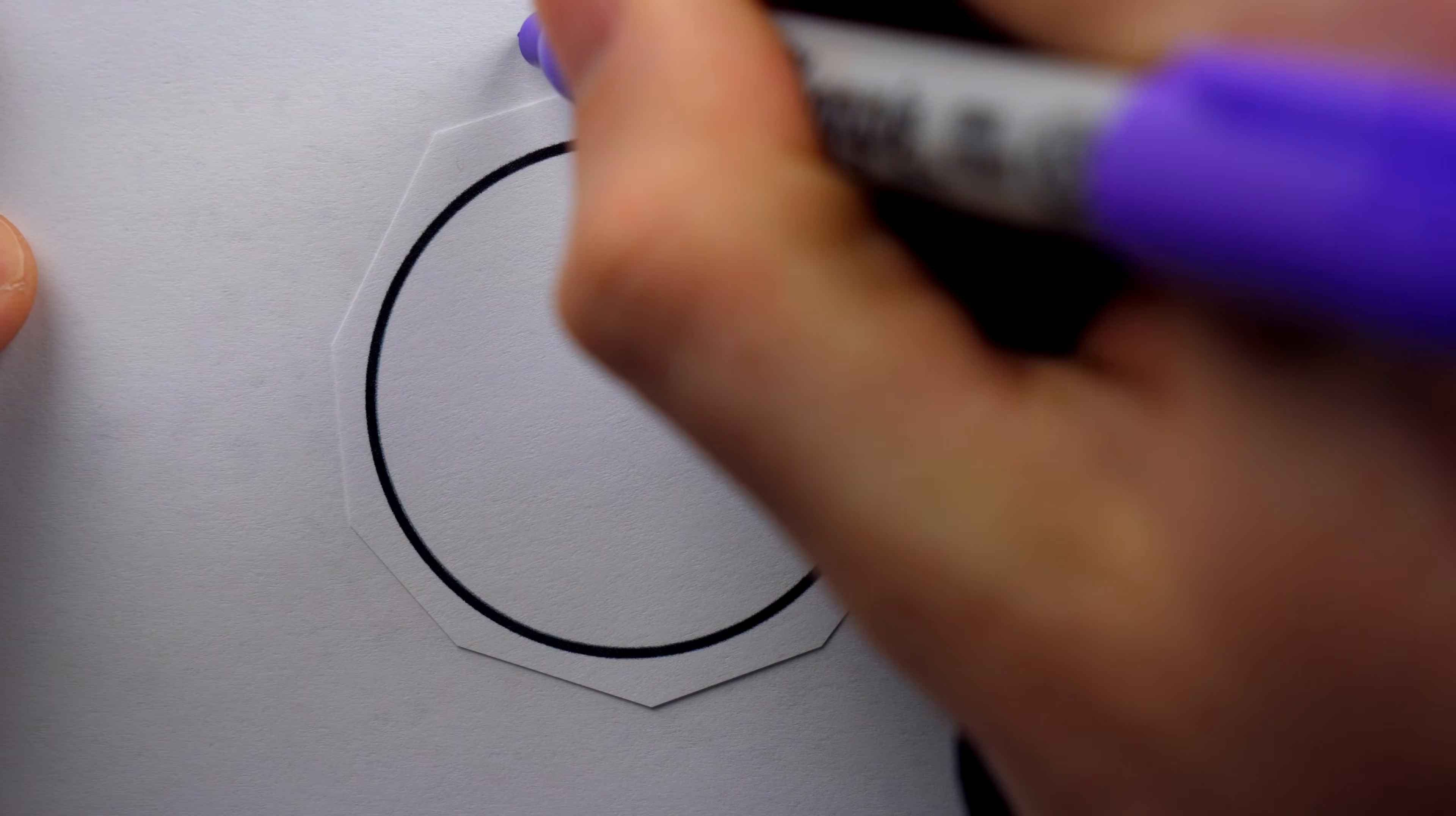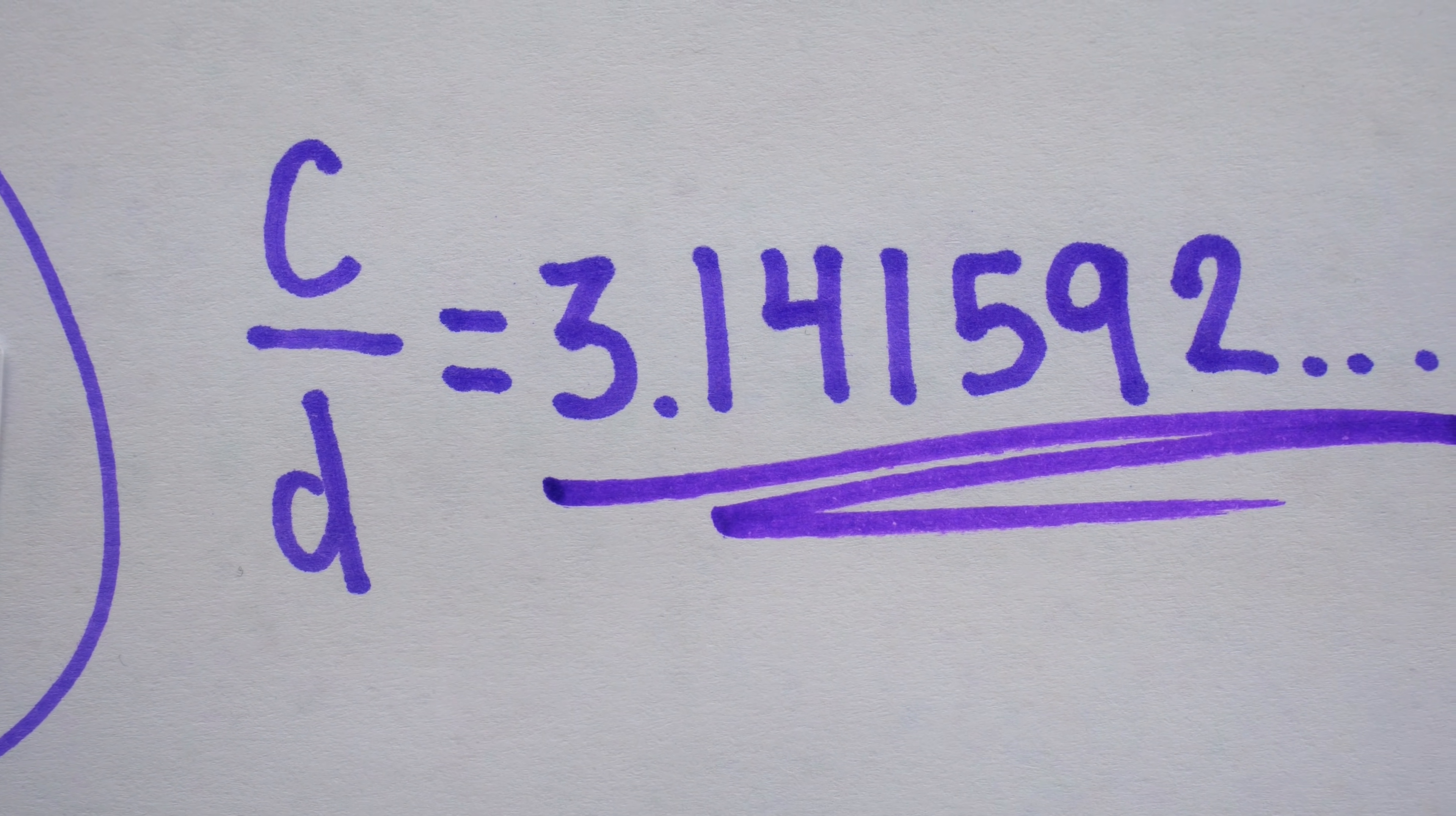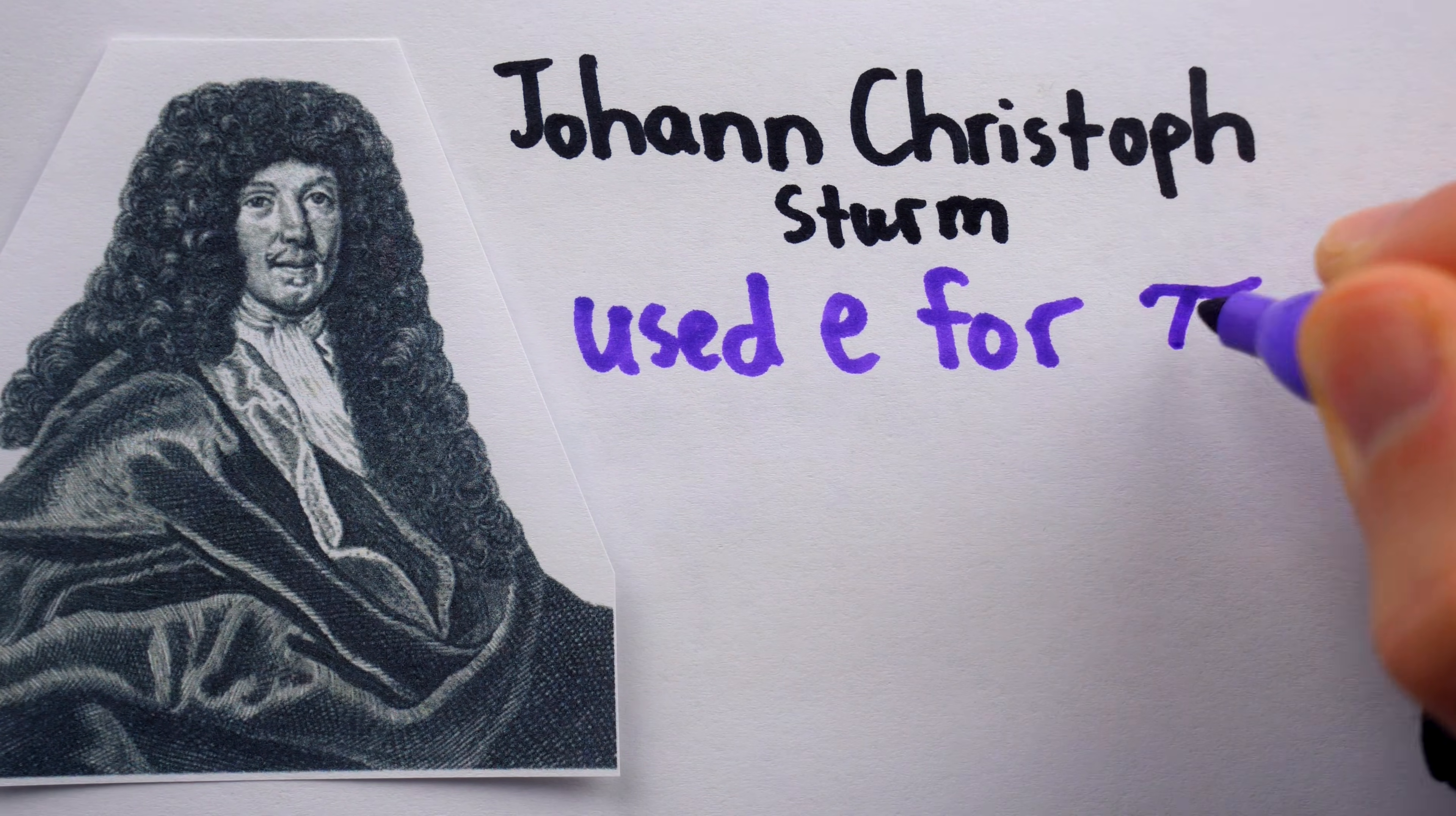Famously, the ratio of a circle's circumference to its diameter is an irrational number that can't be described completely with its decimal expansion. So to refer to the exact value of this number, a symbol must be used. And possibly the first such symbol used to denote this value was, that's right, E. Johann Christoph Sturm used E for this famous number way back in 1689.